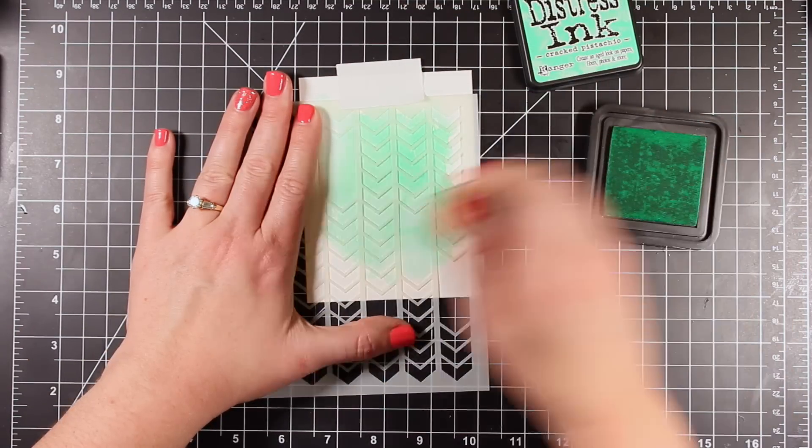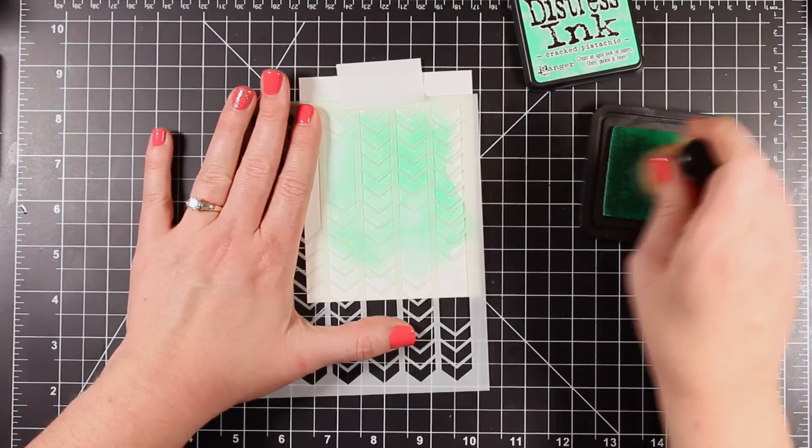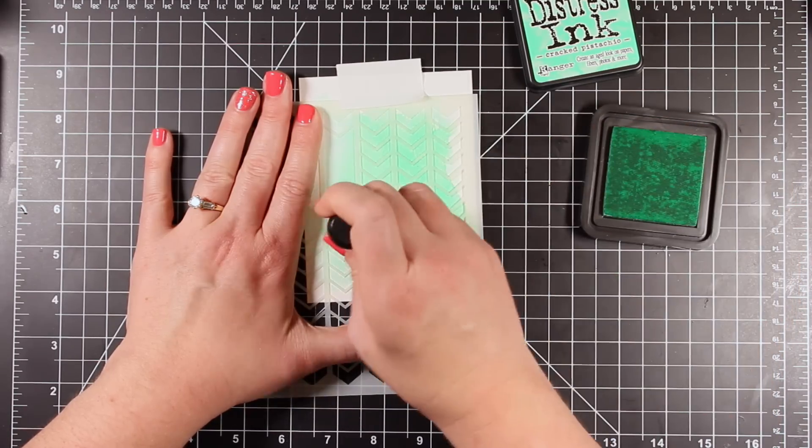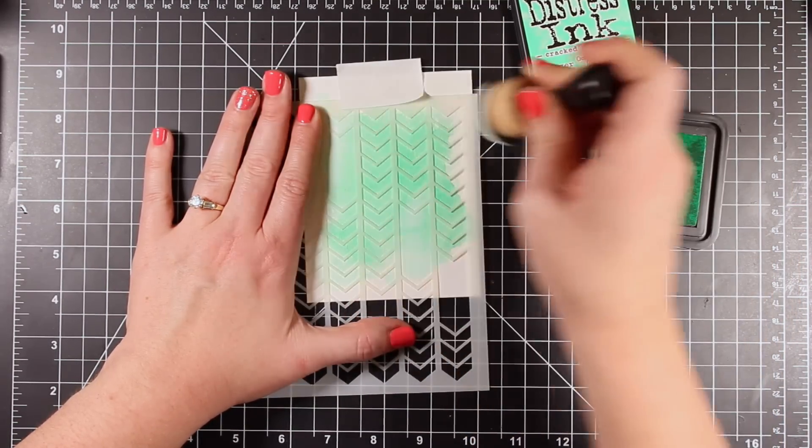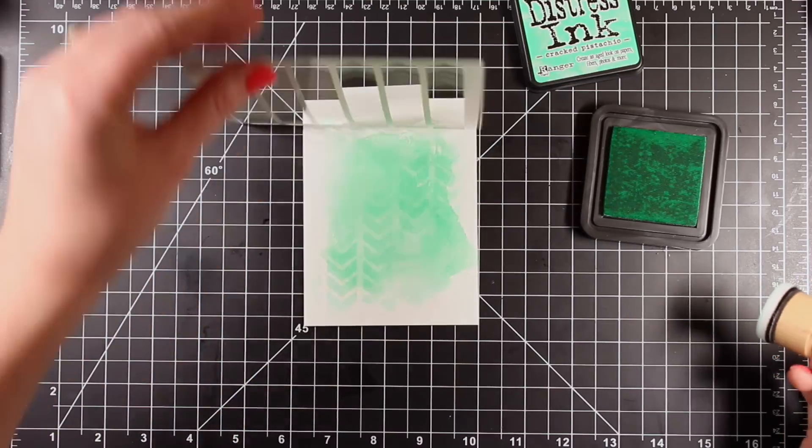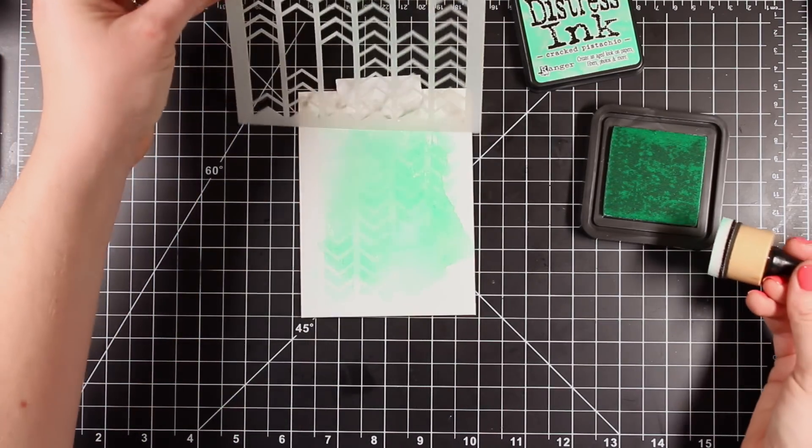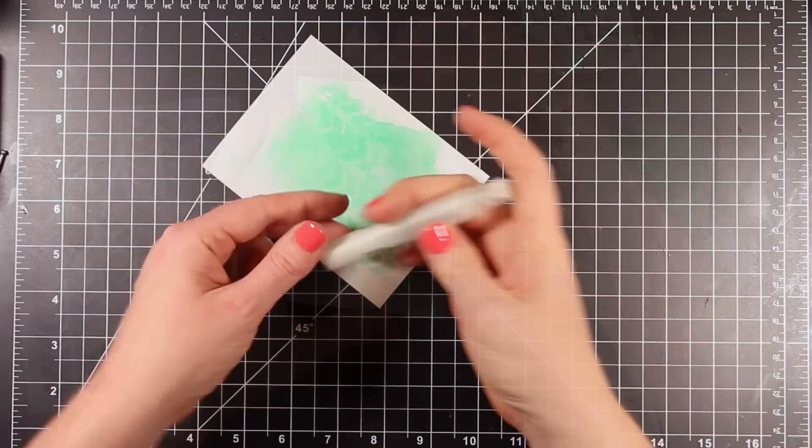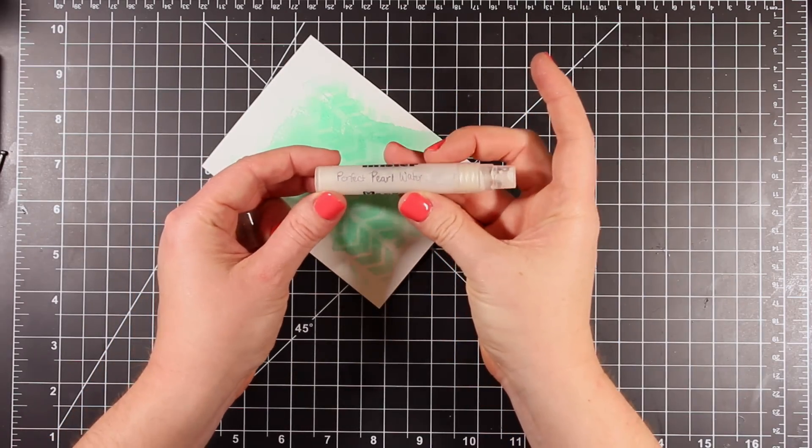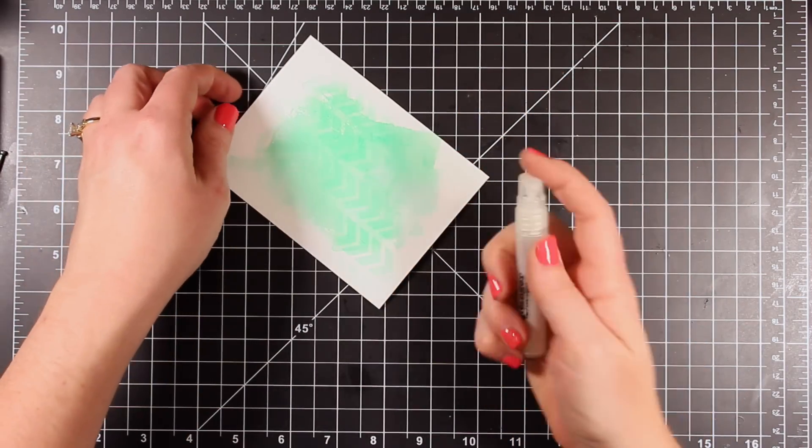I'm going to secure this stencil over the top and use my mini ink blending tool to add some ink over this Hero Arts Arrow Pattern Stencil. Now I'm not inking the entire thing, I'm just kind of doing a portion of it like a partial inked technique. So now you have kind of this tone on tone look with that beautiful cracked pistachio ink.